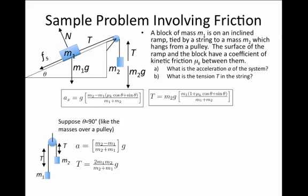This is a lot like a sample problem we did before. If we insert theta is 90 degrees, the cosine of theta will equal 0. The sine of theta will equal 1. And if we look at our expression for a,